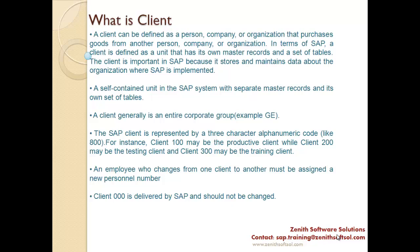A client is a self-contained unit in the SAP system with separate master records and its own set of tables. For example, we are logged into client 800. This client 800 will have its own master records and its own set of tables. If an employee changes from one client to another client, that employee must be assigned a new personal number in the different client. Client 000 is delivered by SAP and should not be changed.